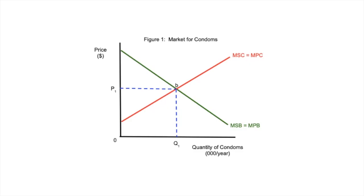Positive externalities of consumption means that the consumption of something — in this case condoms — is going to have an additional social benefit as a result of being consumed. In market failure, any time you're talking about consumption, you're moving this demand line. If it's consumption that line shifts; if it's production, that line shifts. Don't get confused — just know which line is shifting.